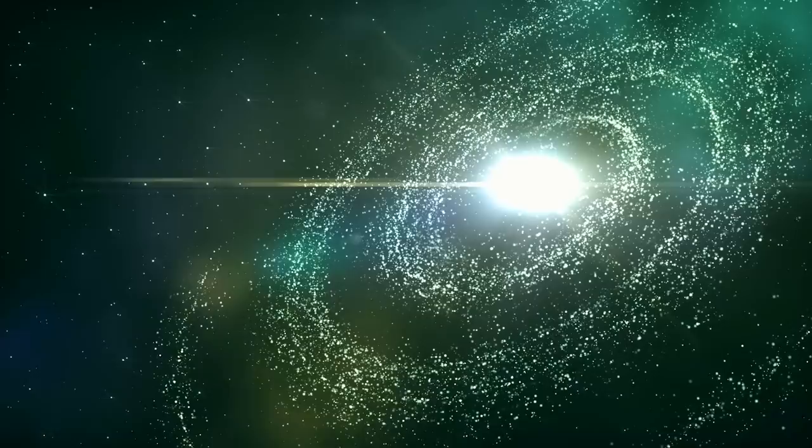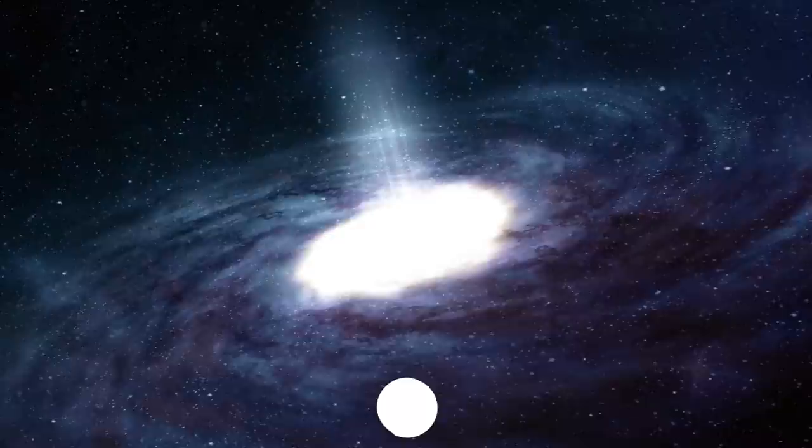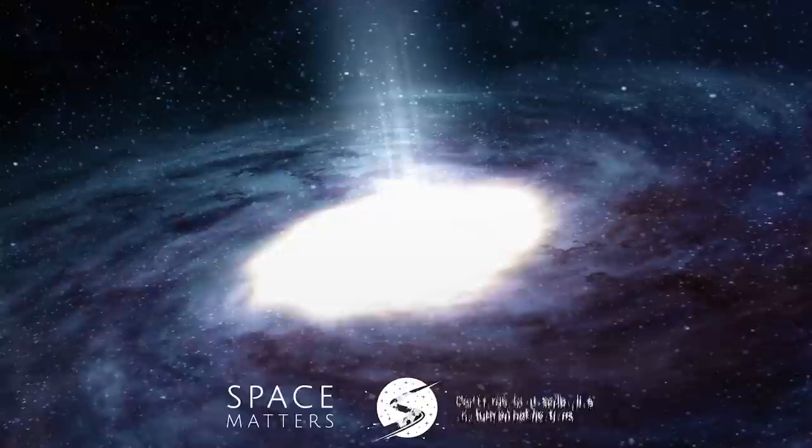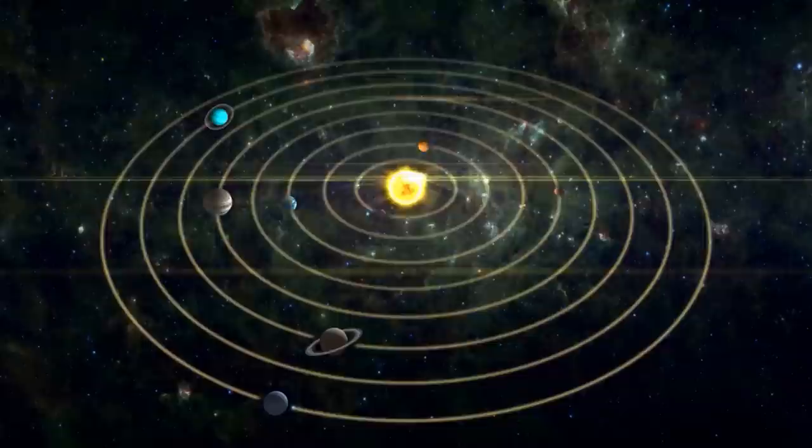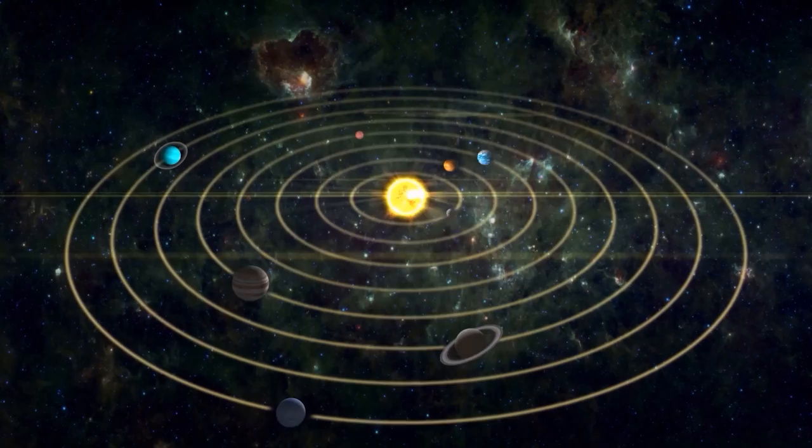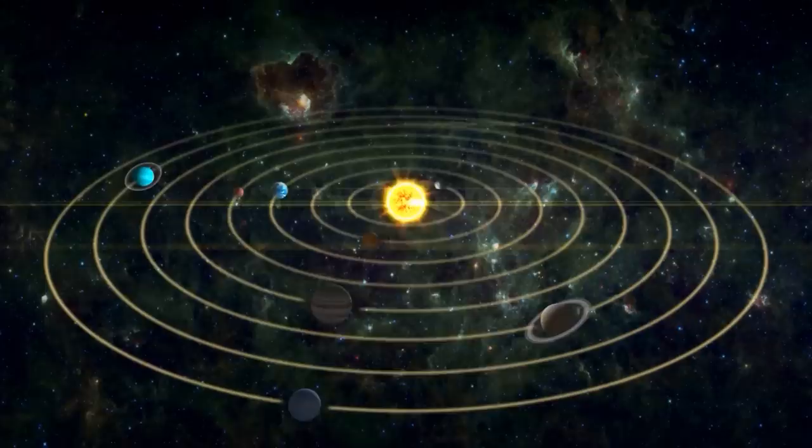Interestingly, the stars in the inner regions of the galaxy move faster than the stars in the outer regions, due to the fact that the parts closer to the center of the galaxy have more mass, and therefore a stronger gravitational pull. This difference in speed is akin to the way planets closer to the Sun move faster along their orbits than those farther away.